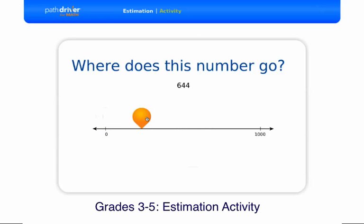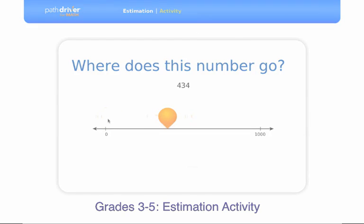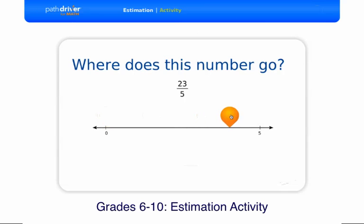At grades three to five, the range is from zero to one thousand. And at grades six and beyond, the number line ranges from zero to five, and all the numbers to be placed are fractions.